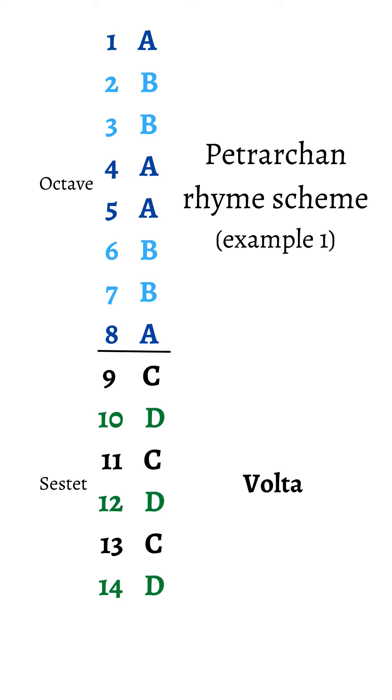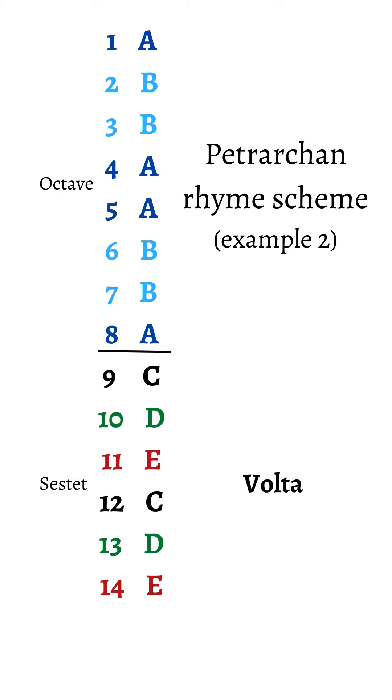Then in the sestet, the volta — those last six lines — the rhyme scheme can vary, but typically you'll see something like this, where the ninth, 11th, and 13th lines rhyme with each other, and then the 10th, 12th, and 14th lines rhyme. Or you might see something like this, where every third line rhymes.